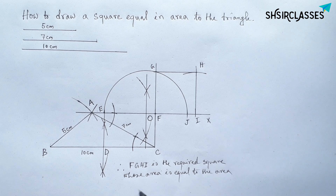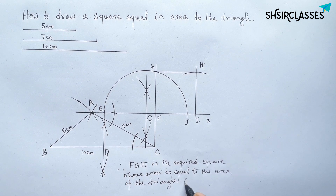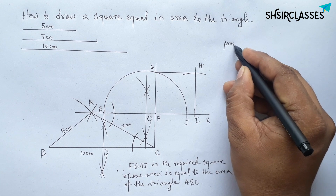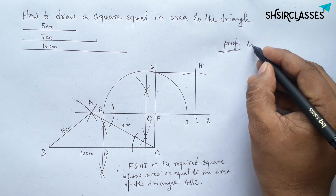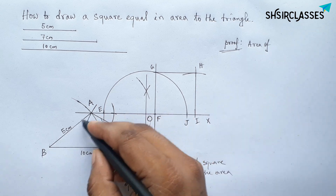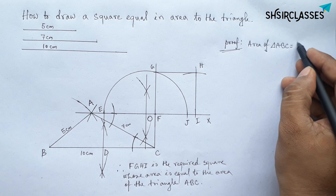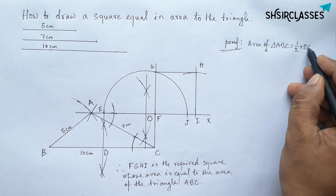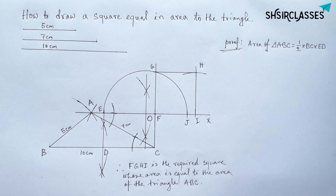Therefore, FGHI is the required square whose area equals the area of triangle ABC. Now I will prove this. The area of triangle ABC equals one-half of base times height, where base equals BC and height equals ED.